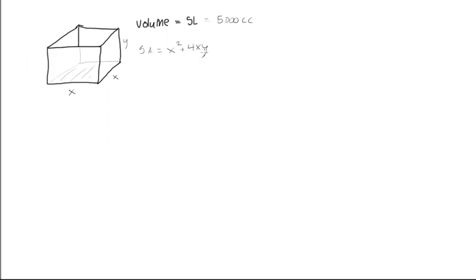Now what we want to do is we have two variables here. We want to eliminate one of them, so we know that also for the volume of a square cube here, it's going to be volume is equal to this dimension times this dimension times this dimension, so it'll be x squared times y. And we also have the volume given to us in the question, so it's going to be equal to 5,000 cubic centimeters.